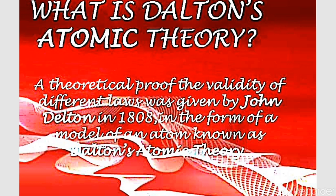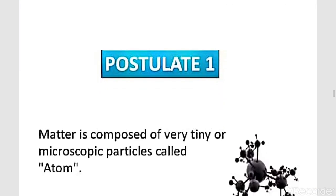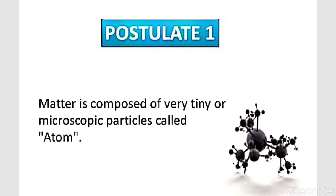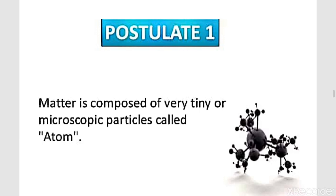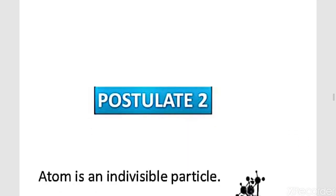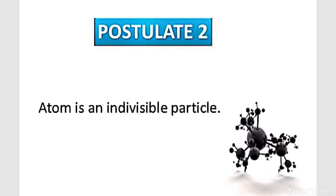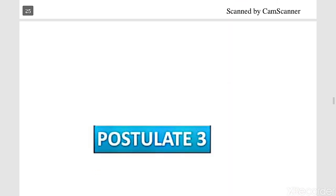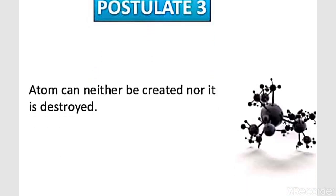That concludes the law of chemical combination. Now we will discuss Dalton's Atomic Theory in detail. Dalton's atomic theory was a theoretical proof to validate different laws, given by John Dalton. He stated that matter is composed of very tiny microscopic particles called atoms. Atoms are the smallest particles which cannot be further subdivided — atom is an indivisible particle. Atom can neither be created nor destroyed.